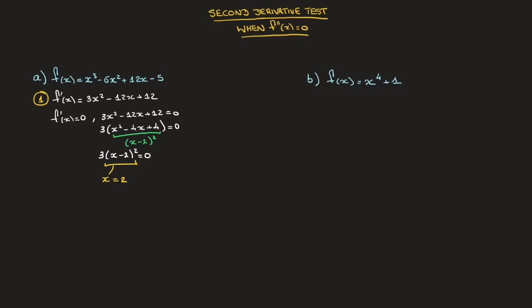This tells us that the function has one single stationary point whose x-coordinate is 2. In a quiz or exam we would have to calculate the y-coordinate by replacing every x inside f(x) with 2. The y-coordinate of the stationary point is y = f(2), which equals 3. So this function's stationary point has coordinates (2, 3).